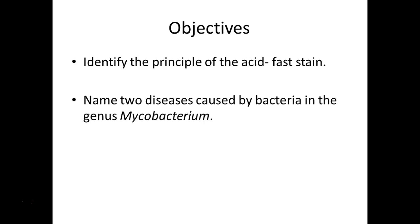Acid-fast staining is another differential stain, very similar to gram staining in structure: primary stain, decolorize, counter stain — giving two different colors. However, in this case the decolorization step isn't just alcohol; it uses acid-alcohol — hydrochloric acid, a very strong acid. The primary stain is called carbol fuchsin, which comes out a purplish-pink color.